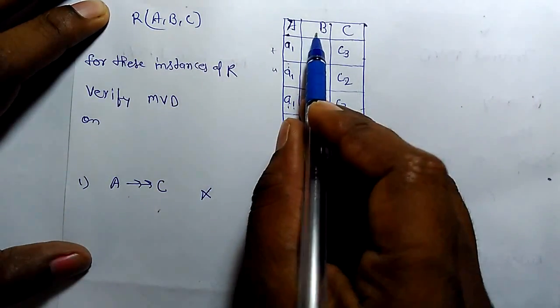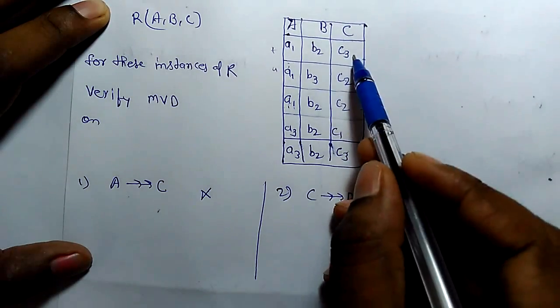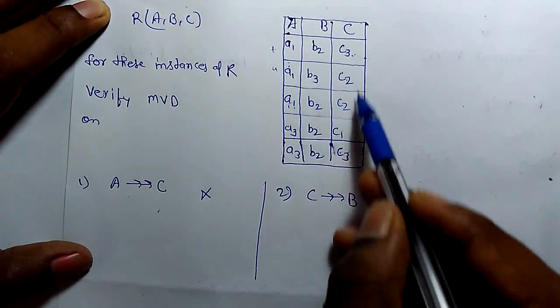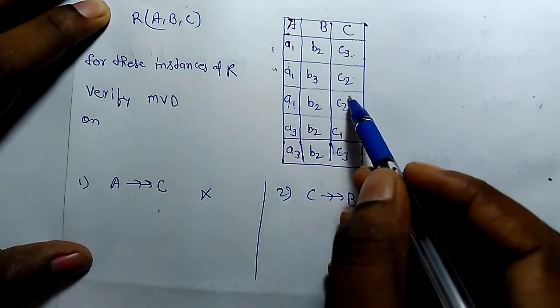C multivalued determine B. There are only two values C3 which are same and two values of C2 which are same.